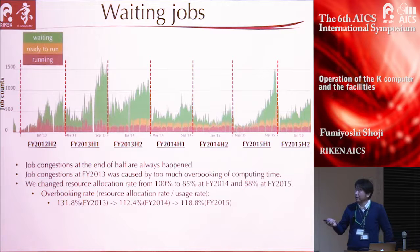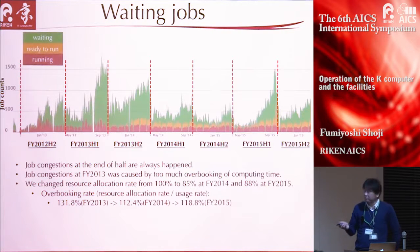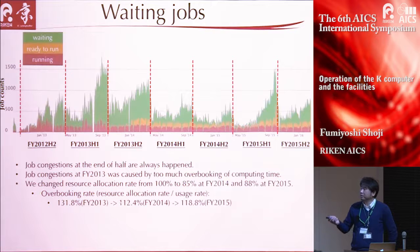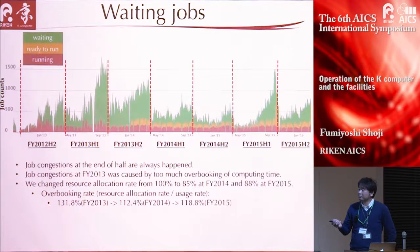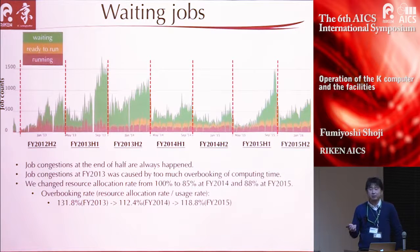We changed the resource allocation rate from 100% to 85% in 2014, and it will be 88% for 2015. The overbooking rate could be improved—it was more than 30% in 2013 and will be improved to less than 20%.